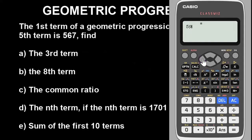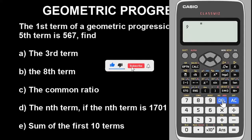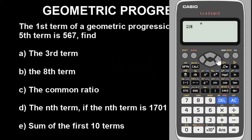Now to find the common ratio. Since we know the first term is 7, you can find the second term by entering 2 and using option 5 in regression to get the second term's value. Then divide that second term value by the first term value — because ratio is about division — to get the common ratio.